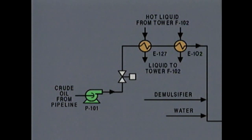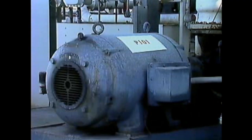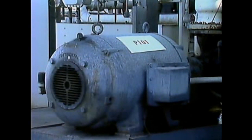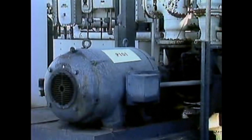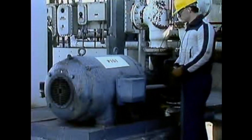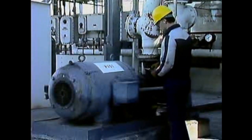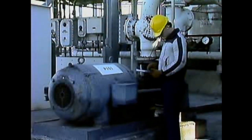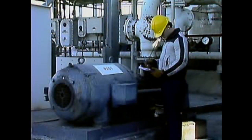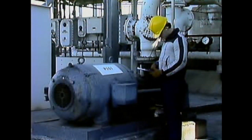We'll start locating equipment in the plant where the crude oil enters the system, here at pump P-101. The major equipment in a system is usually marked with its ID number, so once you're in the general area of the pump, you can check ID numbers on the pumps there to find the right one.